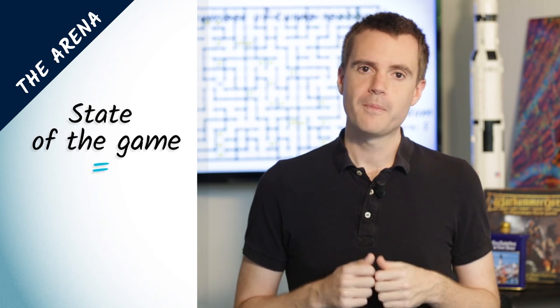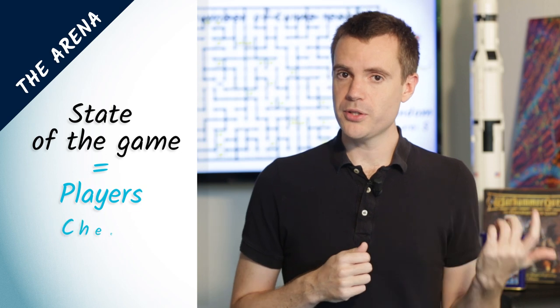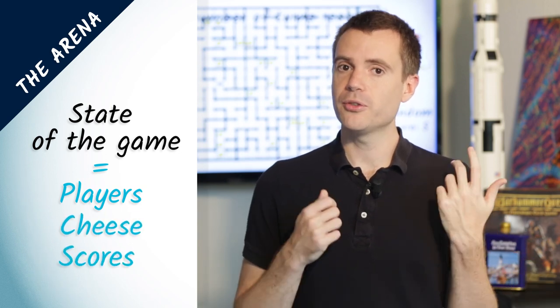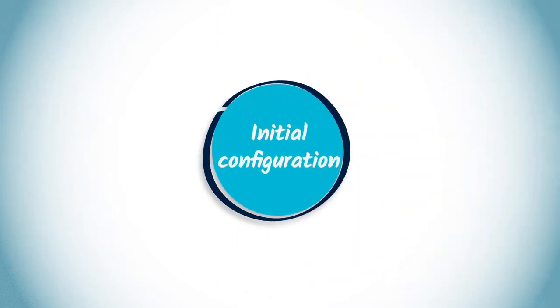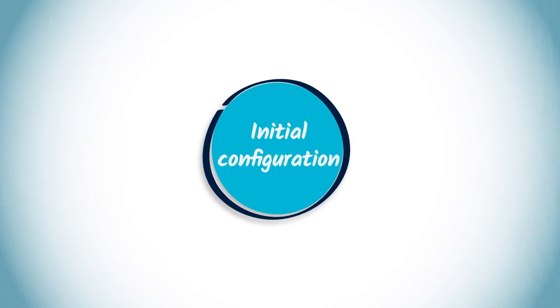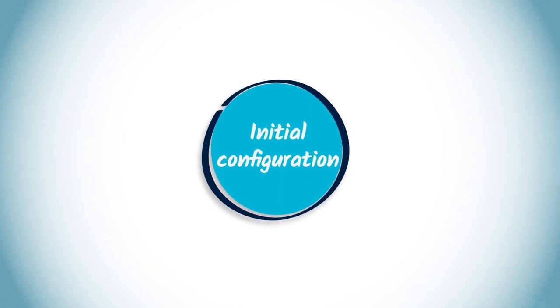To describe a game, we use a very specific graph that we call the arena. The arena is a graph where each vertex summarizes the actual state of the game. By state of the game, we mean the positions of the players, the positions of the remaining pieces of cheese, and the score for each player.